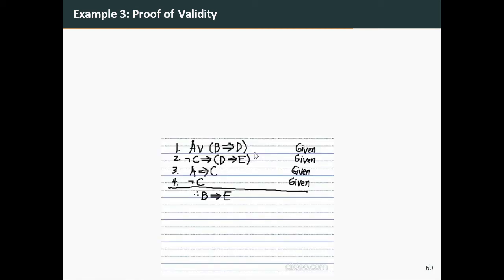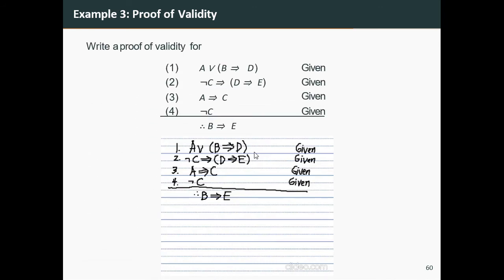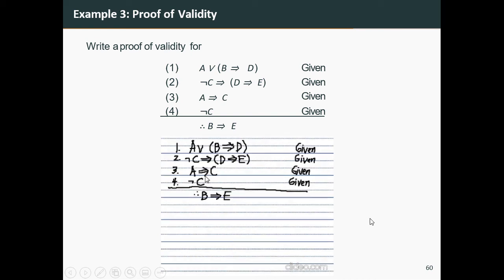Let's try example three. We will write a proof of validity for this argument. We have four given premises and are asked to conclude b implies e. Let's take a look at the video demonstrating the proof for this argument.